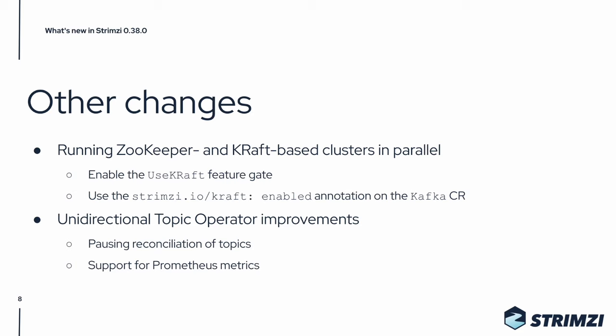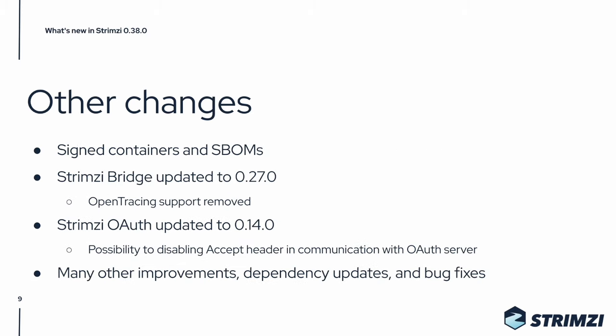We also have some improvements to the new unidirectional topic operator. We now support pausing the reconciliation of Kafka topic resources and have support for Prometheus metrics. From 0.38 on, we are also signing our container images using the Cosign tool and we are publishing the software bill of materials for them as well.